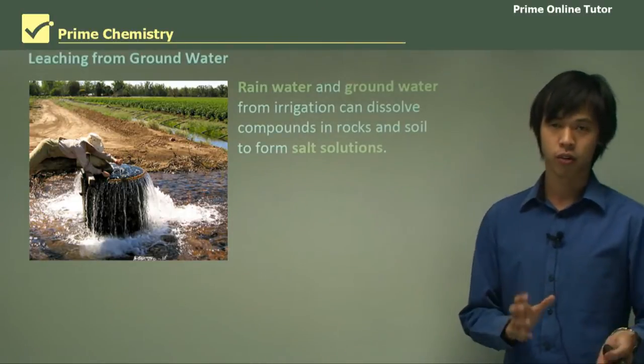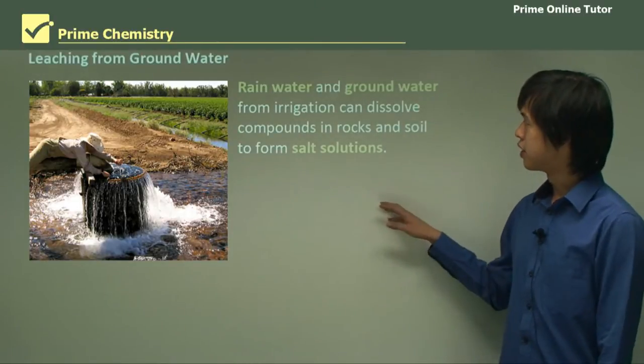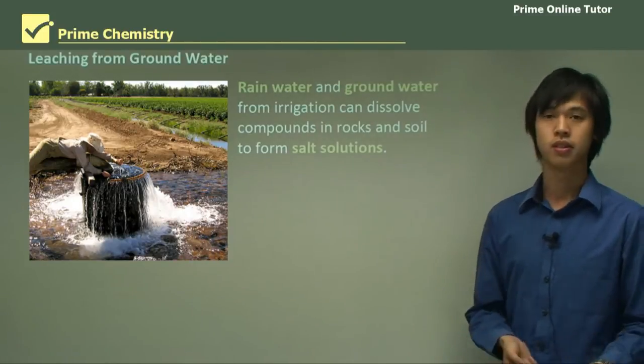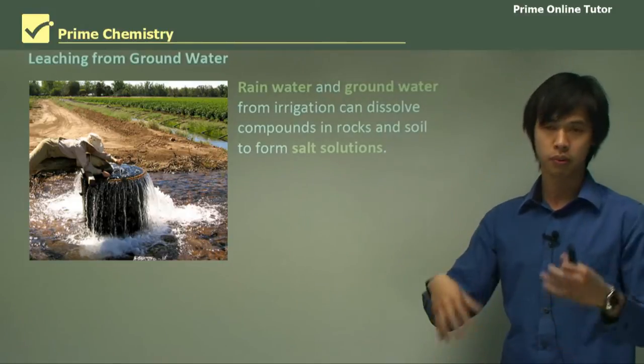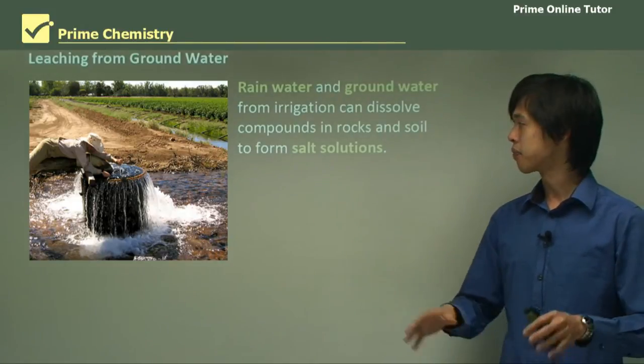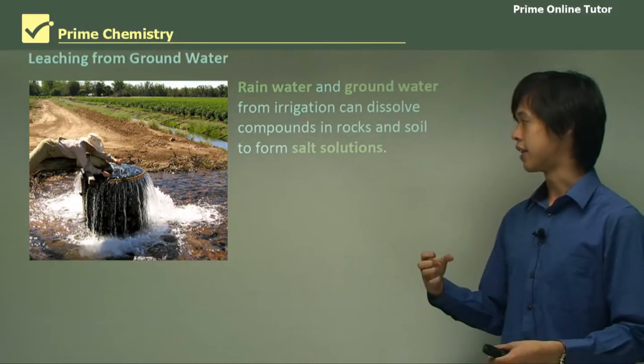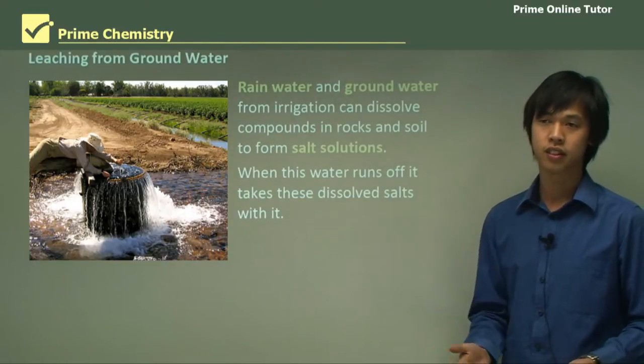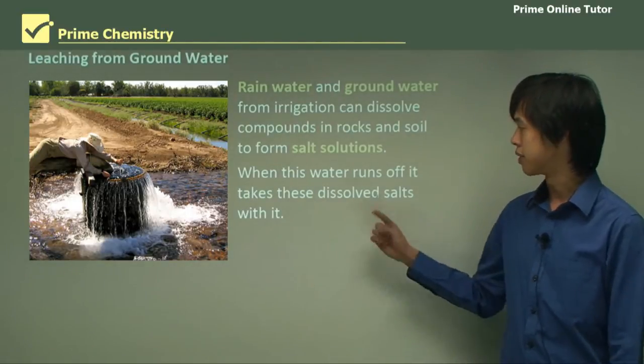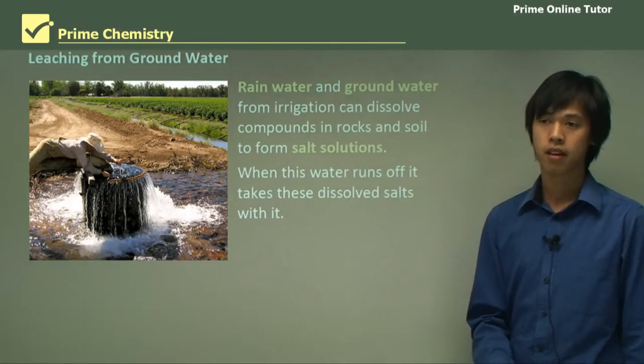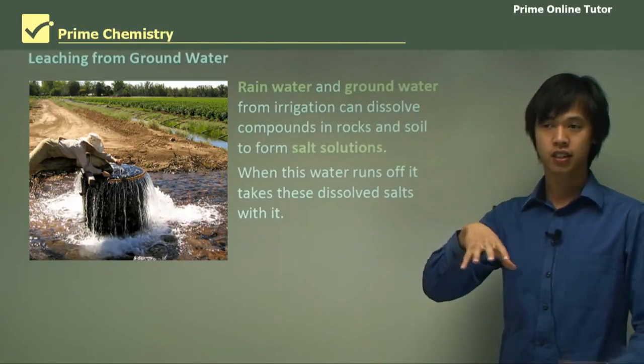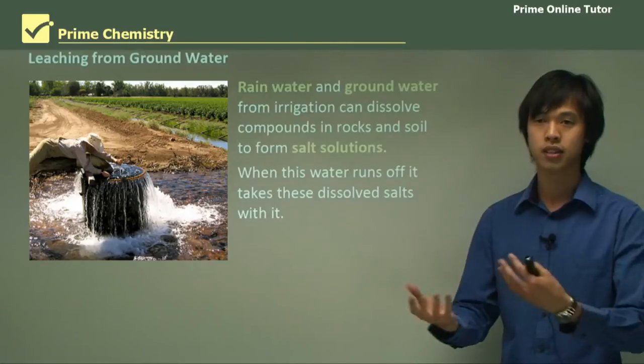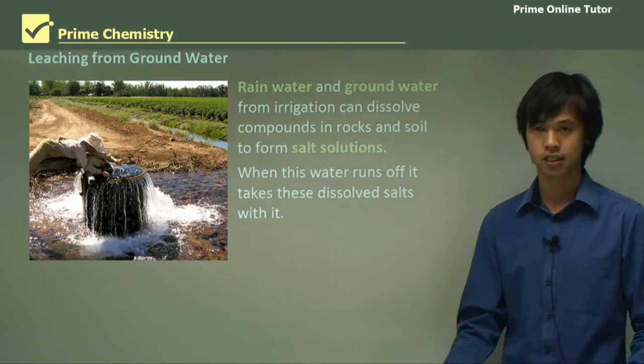We'll look at leaching and groundwater in a little bit more depth now. Rain and groundwater from irrigation can dissolve compounds in rocks and soil to form salt solution. As I mentioned, when it rains or when we put water into the soil for irrigation purposes, it dissolves the ions in the soil and that gives us a salt solution. This water runs off because all water leads back to the ocean, so it runs off and takes these dissolved salts with it. When it rains and then it dissolves all those salts and then that water leads to the ocean, it brings the salt with it and that adds to the salt concentration of the ocean.